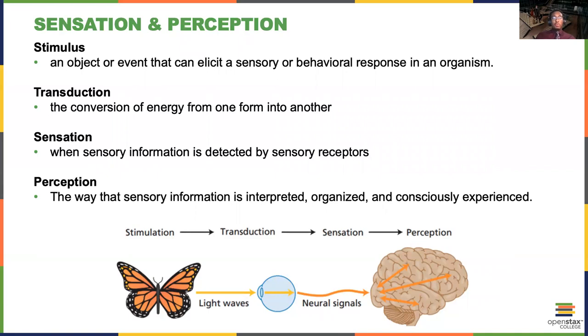Two other terms that are important to know for this discussion on sensation and perception are stimuli or a stimulus and transduction. So stimulus is any object or event that can elicit a sensory or behavioral response in an organism and transduction is the conversion of energy from one form into another. So in this example down here when you see a butterfly certain light waves enter your eye and so the butterfly is the stimulus and the light waves enter your eye and are converted into neural signals through a process of transduction that we'll describe in more detail in the next video.